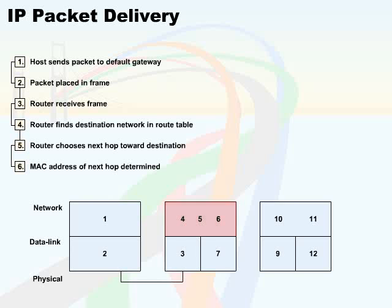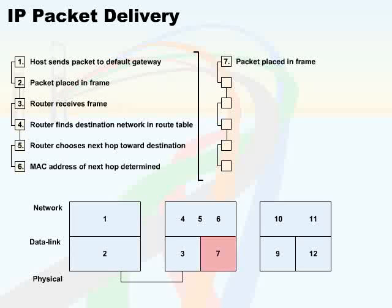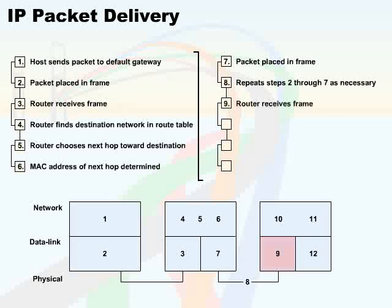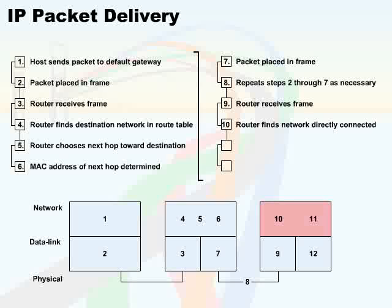Finally, once the MAC address of the next hop is determined, the packet will be placed in a frame. It will then repeat steps 2 through 7 as necessary to get all of the packets towards the destination. Once the final router receives the frame, the router will find the network to which it is directly connected.